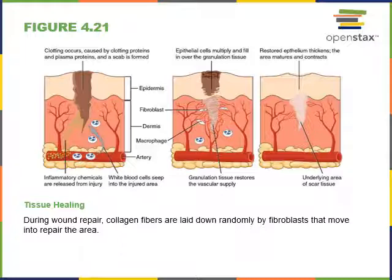Inflammation is the next — or simultaneous — response to damage. Inflammation works to increase the number of leukocytes or white blood cells in the tissue to defend against infection and remove damaged tissue. Inflammatory chemicals are released in response to tissue damage; they attract leukocytes and stimulate increased blood flow to the tissue. The four cardinal signs of inflammation are redness, heat, swelling, and pain.